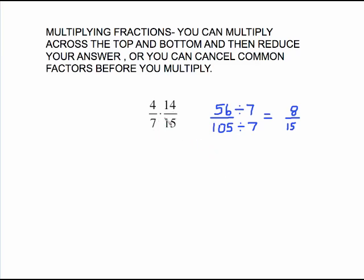7 and 14 have a common factor of 7. So 7 divides into 7 once, 7 divides into 14 twice. There are no more common factors. Multiply. 4 times 2 is 8, 1 times 15 is 15. So canceling before you multiply is going to keep the numbers smaller and therefore is going to make the problem a little bit easier for you.